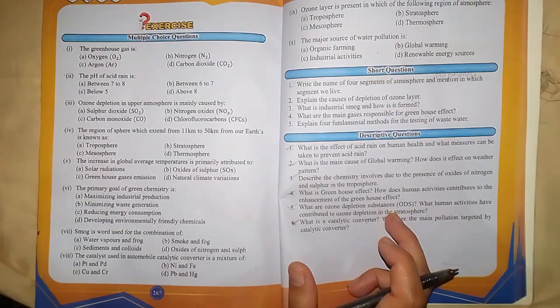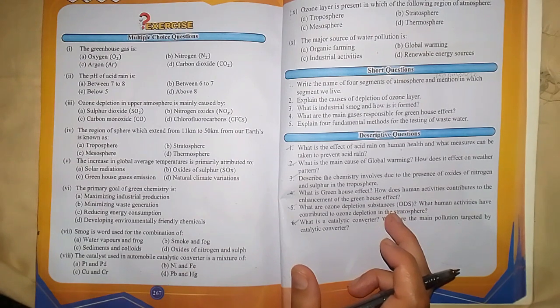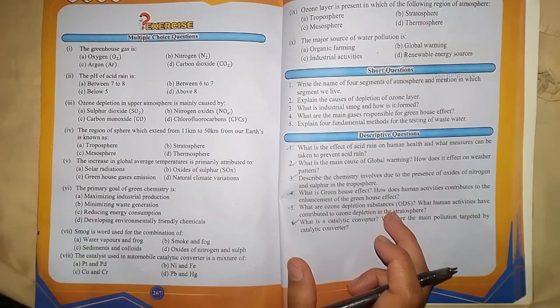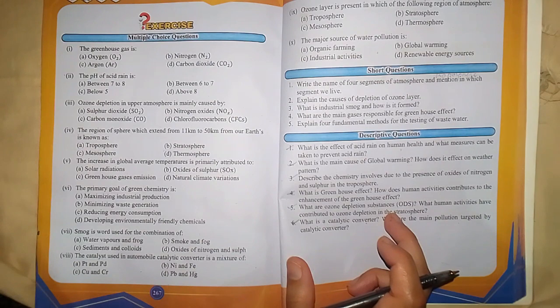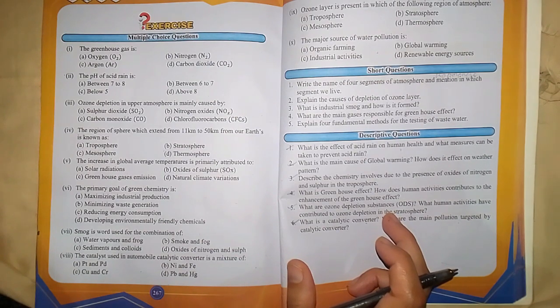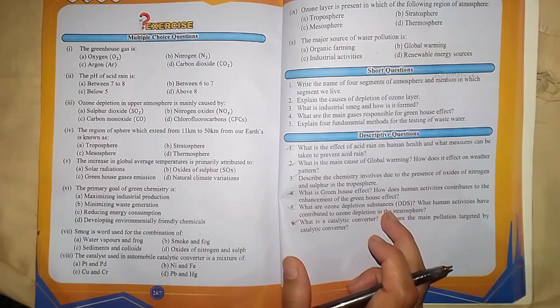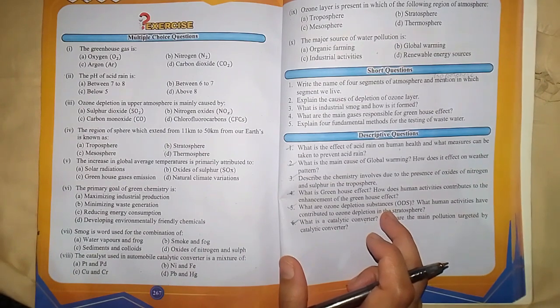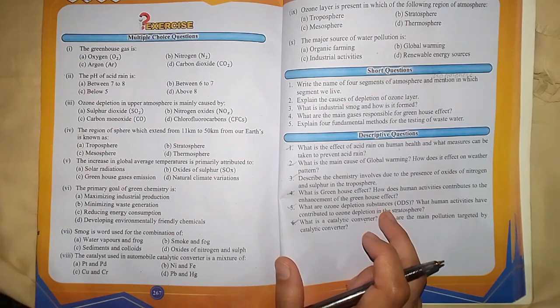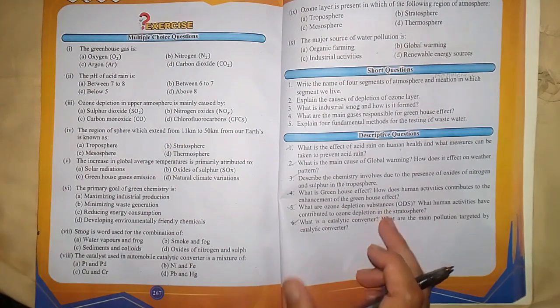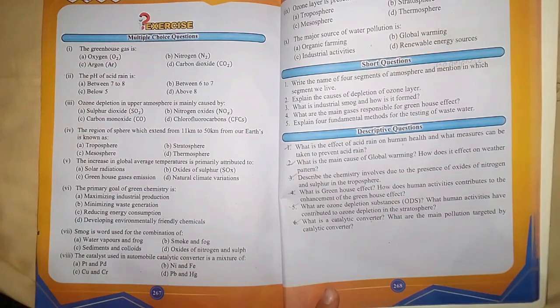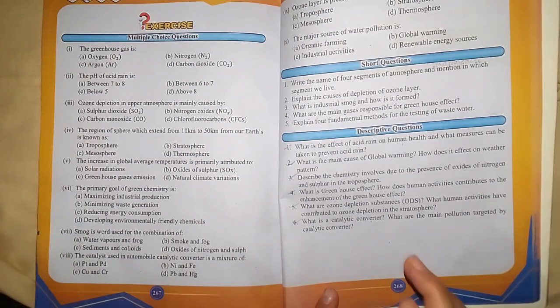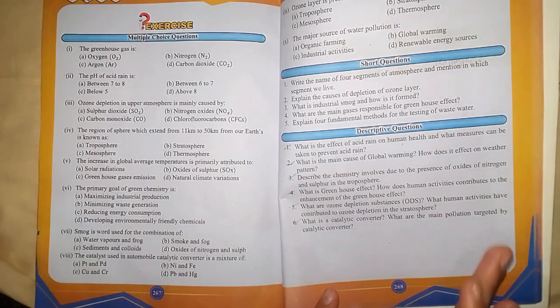This chapter is totally memorization-based. The MCQs are not highly conceptual, but you should know topics like greenhouse effect, water pollution, and photochemical smog. This is cramming and some conceptual understanding. You have to read the book throughout and you will easily be covered.